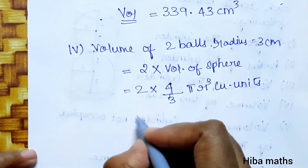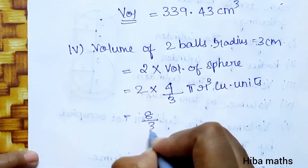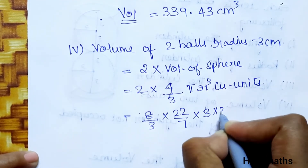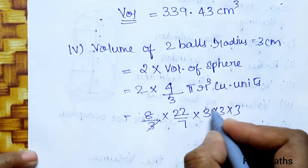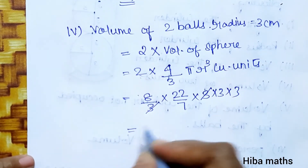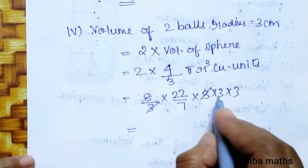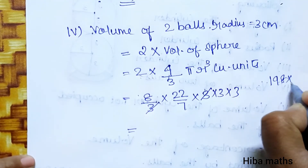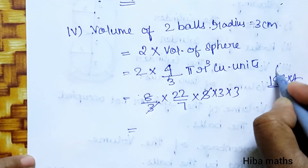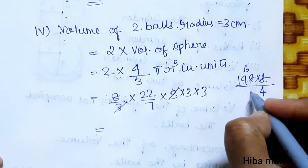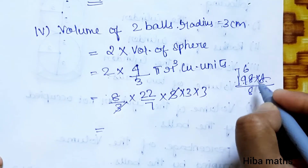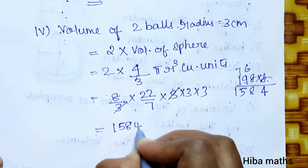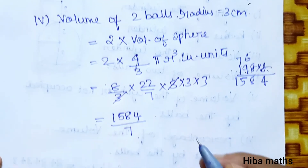Calculating: 2 × (4/3) × (22/7) × 3³. The 3s cancel: 3 × 3 × 3 = 27, one 3 cancels to leave 9. So 2 × 4 = 8, 8 × 22 = 176... continuing: 2 × 9 = 18 × 8 = 1584. Now dividing 1584 by 7.